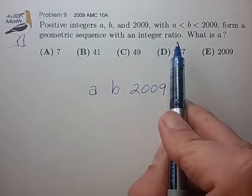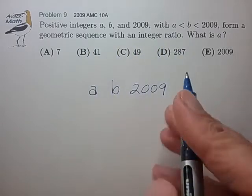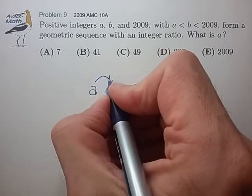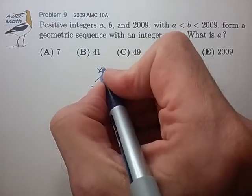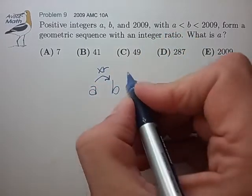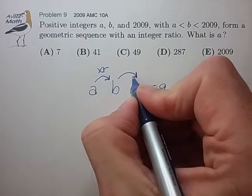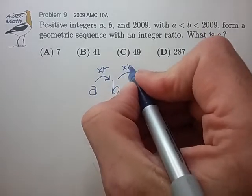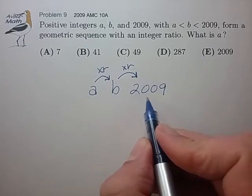The integer ratio is the multiplication factor that, when multiplied by a, gets us to b. When we multiply by that same integer ratio factor again, it takes us from b to 2009.